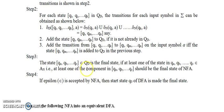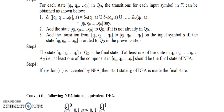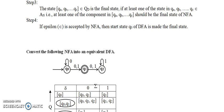Step 3: Suppose a state {QA, QB, QC} belongs to QD. It will be a final state if at least one of the states QA, QB, or QC is a final state in the NFA. Now we will take one example and it will be more clear.